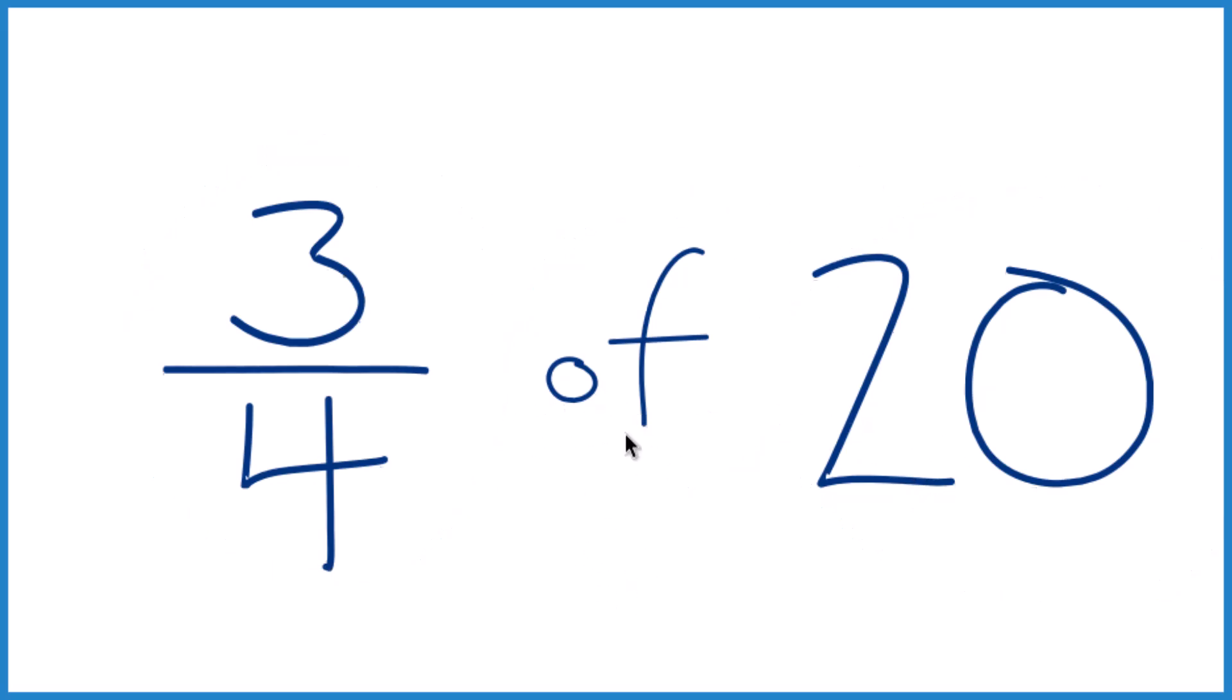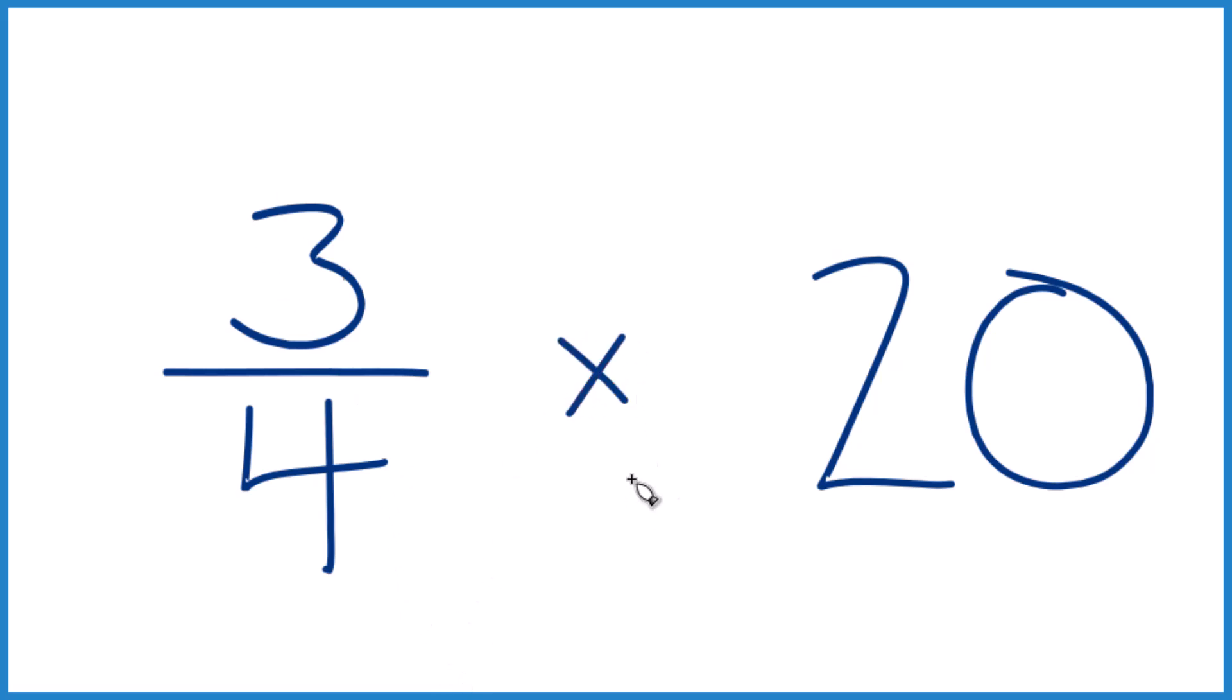So that of right there, let's think of that as multiplication. So we have three-fourths times 20 instead of three-fourths of 20. Same thing, though.